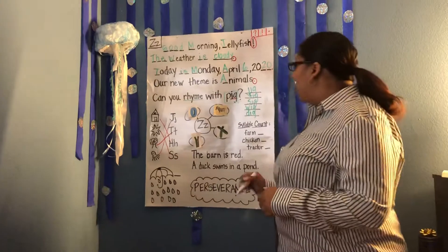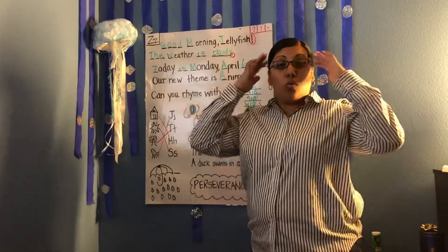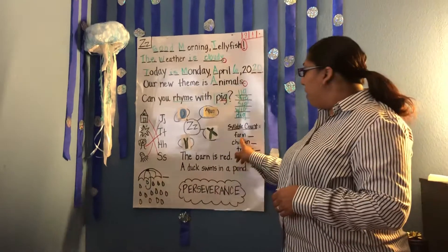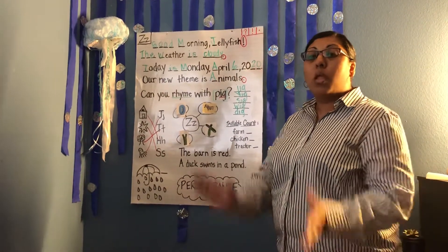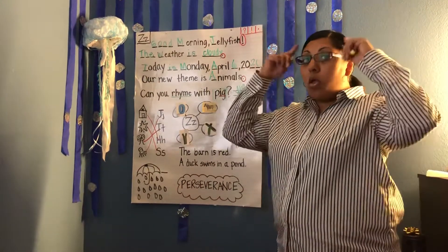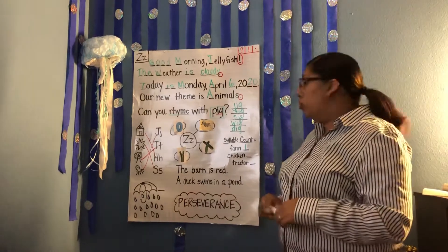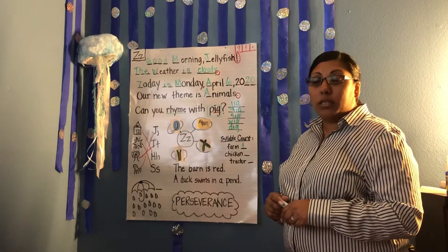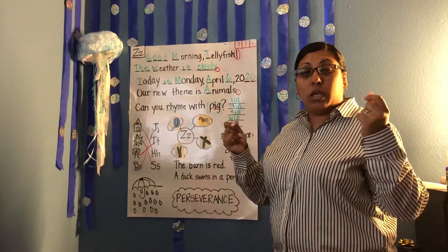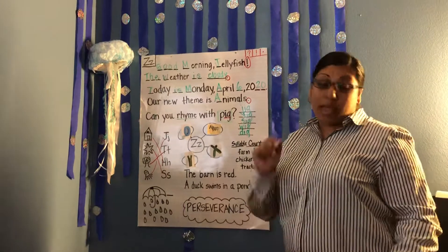We're moving right now, boys and girls, to syllable count. We're going to count our syllables. Remember how we do our syllables in our class — we clap it, we snap it, and we do the body parts. Since we're talking about the theme animals, we have the word farm. Can you say that with me? Farm. That's right — farm. We're going to clap farm. Ready? Go. How many syllables? One. Just one syllable in the word farm. The next word is another animal you will find on a farm — and that is chicken. Say that with me, class. Chicken. Let's clap it. Chicken. Snap it. Chicken. And body part. Chicken. And let's count: one, two. How many syllables in chicken? That's right — two syllables.